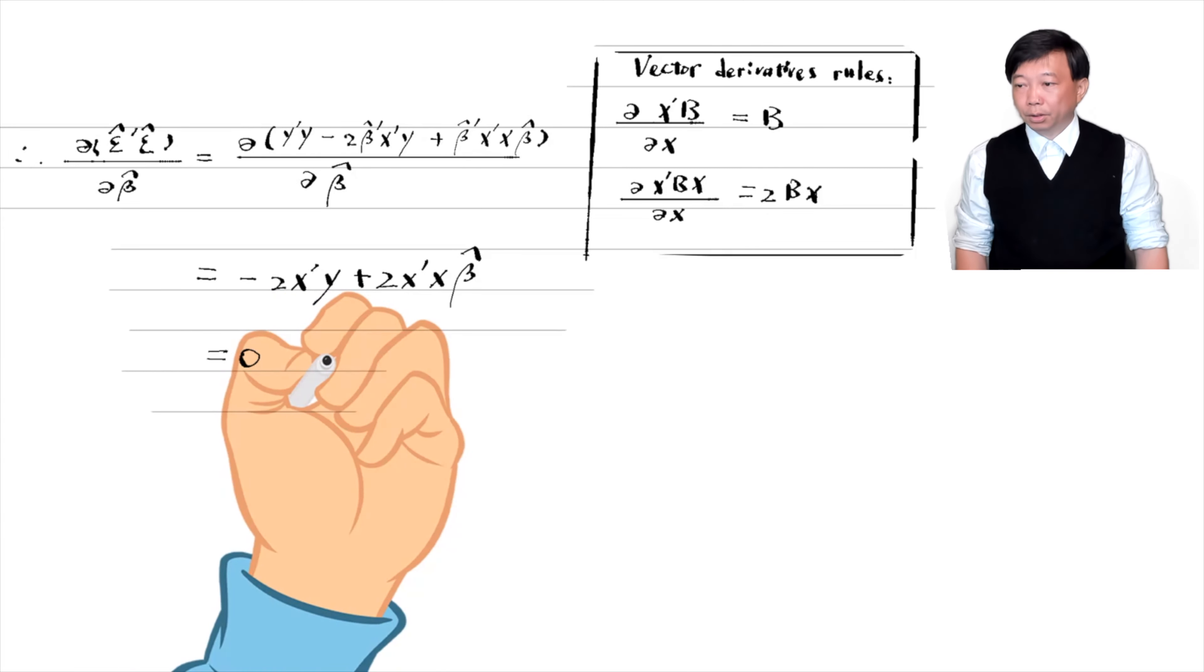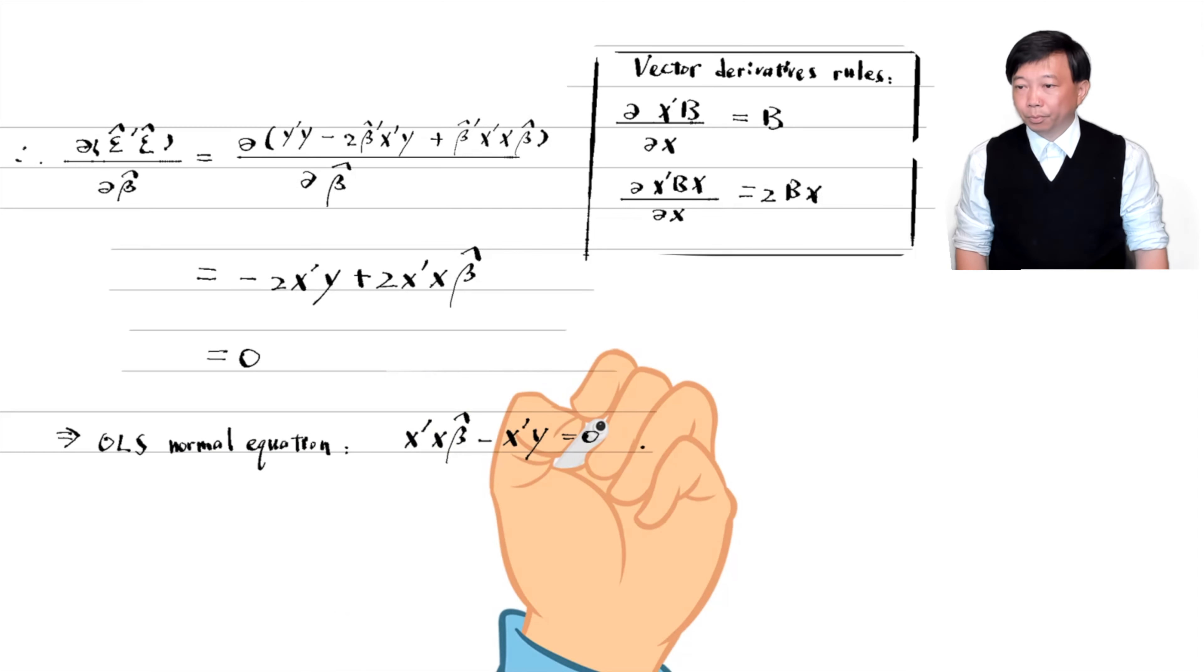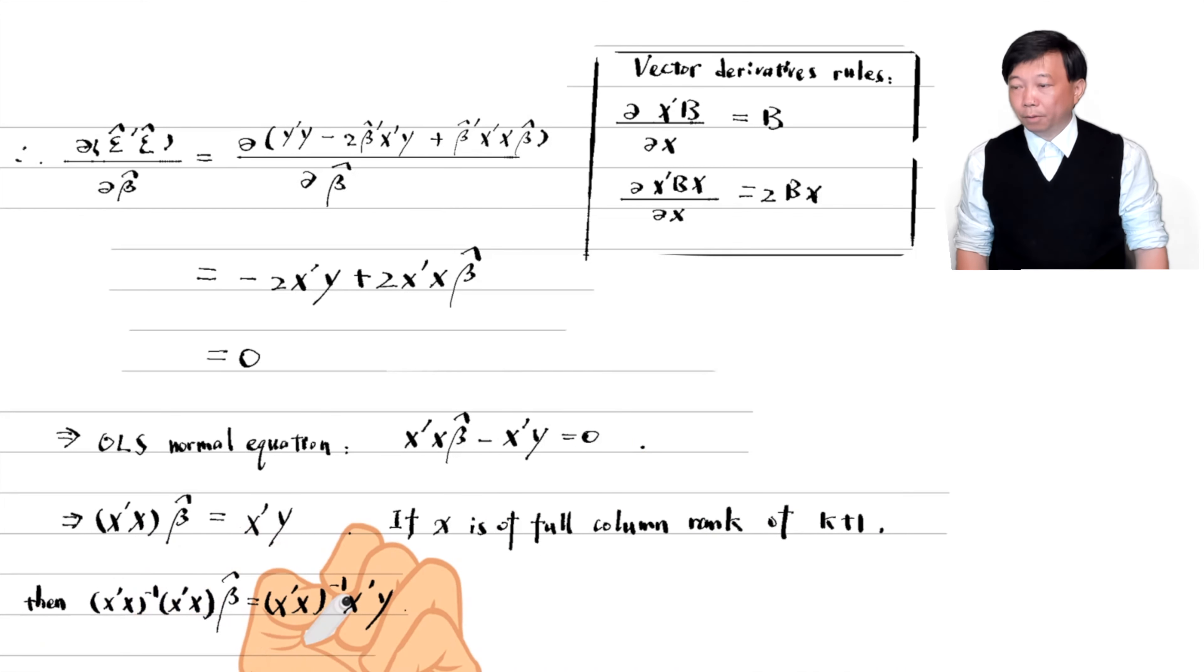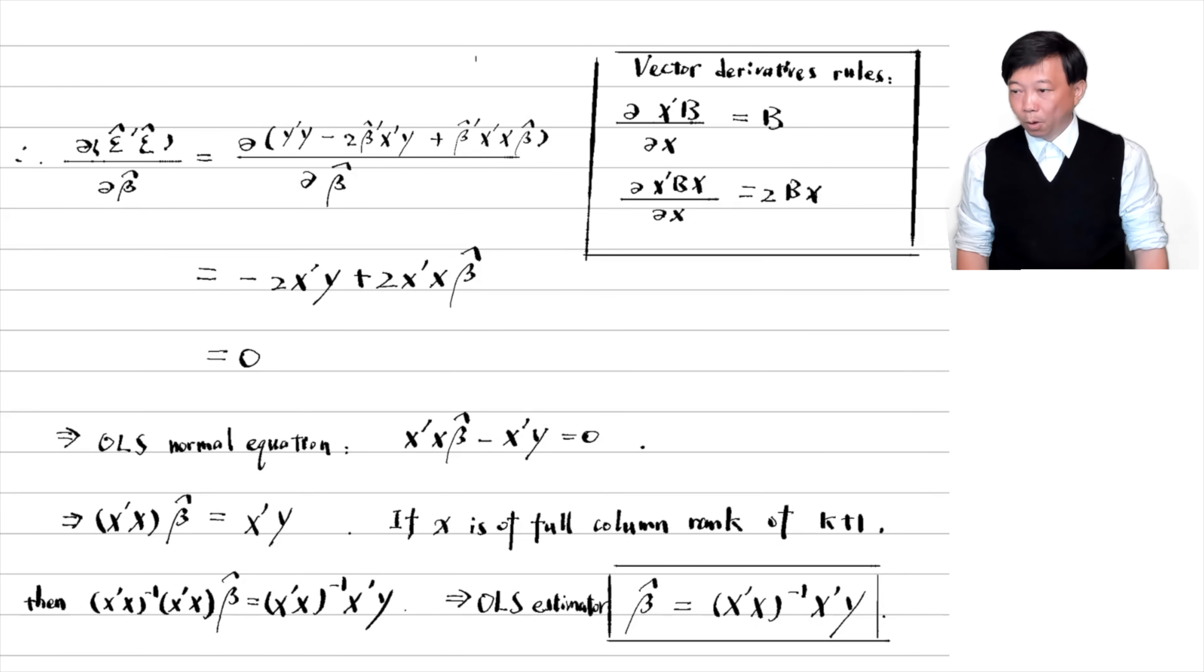Finally, the first order condition leads to the OLS normal equation. If the explanatory variable matrix x is of full column rank of k plus 1, then the inverse of x prime times x exists. We can obtain the OLS estimator in matrix form.